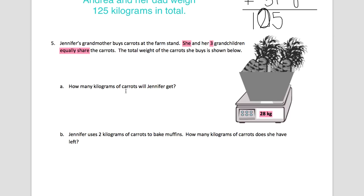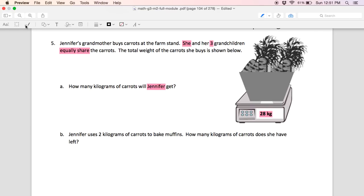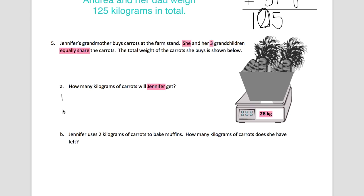How many kilograms of carrots will Jennifer get? How many people are sharing these carrots? We have the grandmother and three more. So I have four people who are sharing these carrots. I'm going to draw a picture. I'm going to start with a tape diagram. And inside that tape diagram, I have four friends who are sharing the carrots. So I'm going to make those four lines.